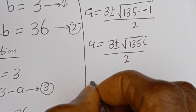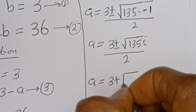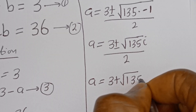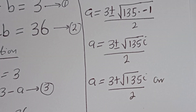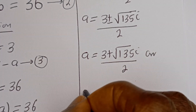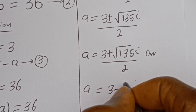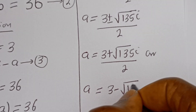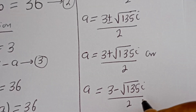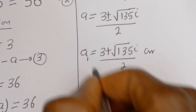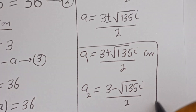Then A1 is equal to (3 plus square root of 135 i) over 2, and A2 is equal to (3 minus square root of 135 i) over 2. We've got the values of A1 and A2.